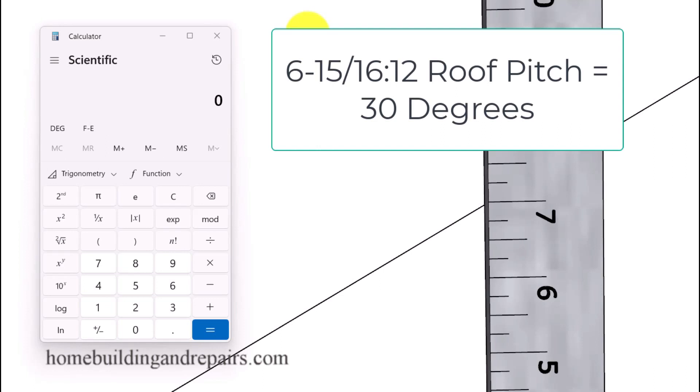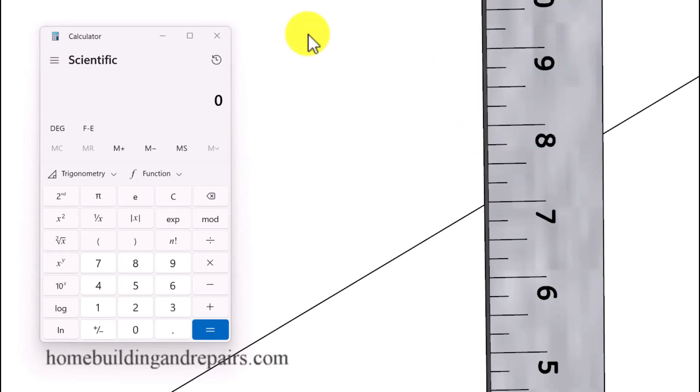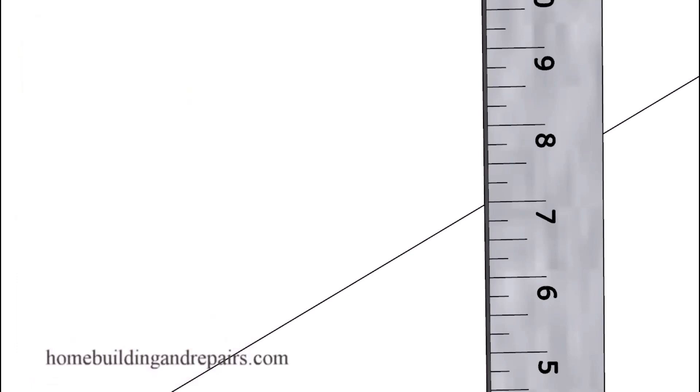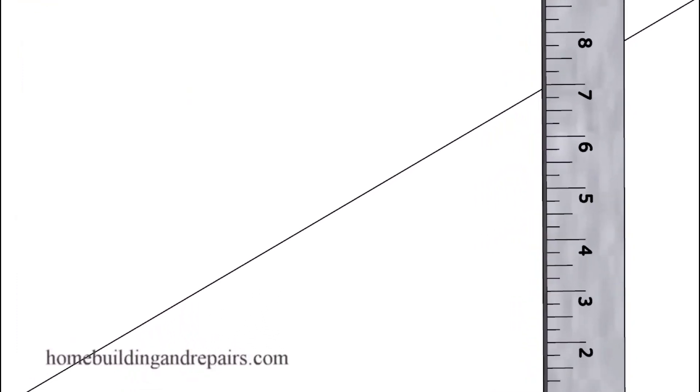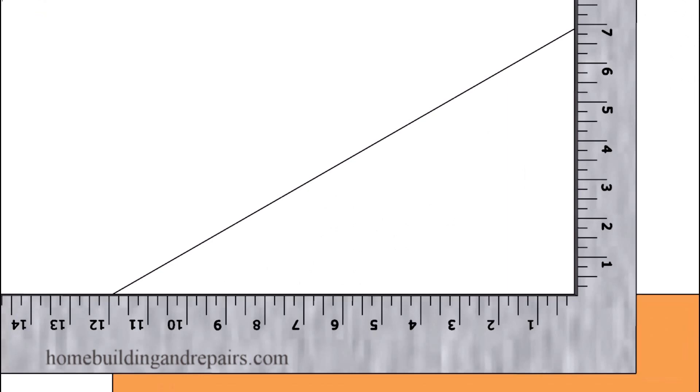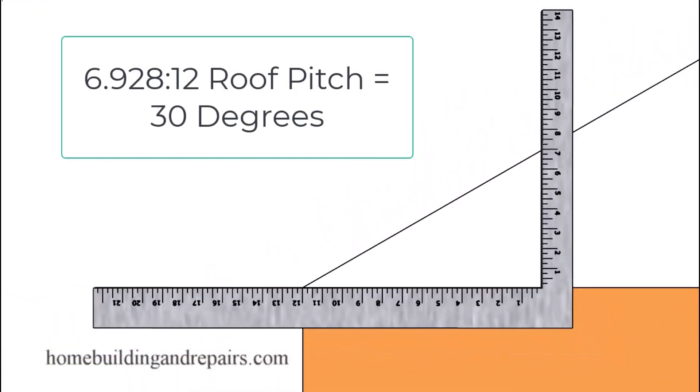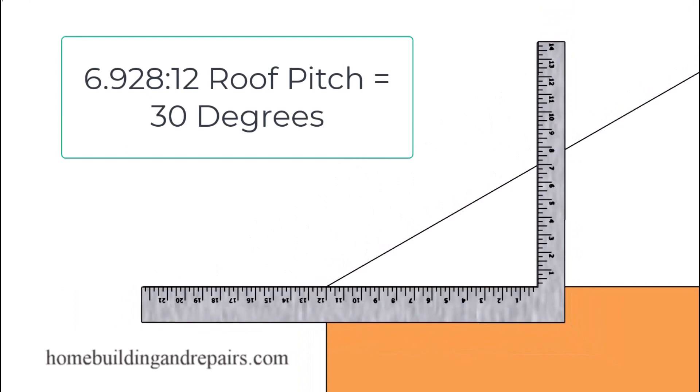And to convert the decimal to sixteenths of an inch fractions we can simply start by dividing 15 divided by 16 equals 0.9375. And that's pretty close to the measurement we're looking for if we're going to use the framing square to lay out our roof rafters. If not we can use the exact decimal. We can take it to hundredths or thousandths on the decimal to calculate the exact length of our roof rafter.